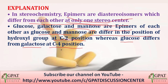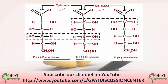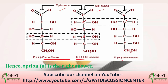Looking at the structures: glucose and mannose differ at C2 — that is carbon 2 — in the position of their hydroxyl group. Galactose and glucose differ at C4 — carbon 4. So galactose and glucose are epimers, and glucose and mannose are epimers. Hence option A is the correct answer.